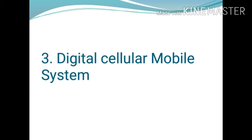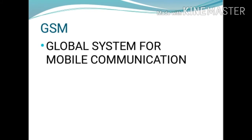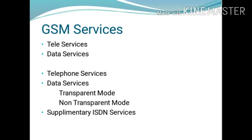GSM stands for Global System for Mobile communication. GSM is the world's first cellular system to specify digital modulation and is the 2G cellular system that was developed to solve the fragmentation problem in analog cellular systems. Analog cellular systems can only use FDMA, but digital cellular systems can use TDMA or CDMA. The first GSM was implemented in 1992.